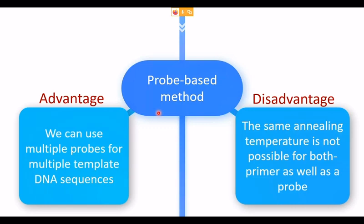The disadvantage of the probe-based method is that the annealing temperatures of the primer and probe may differ, causing problems. We must ensure the primer and probe have closely matching annealing temperatures. For example, if the annealing temperature is set at 60°C, both the primer and probe should have melting temperatures close to that value. Mismatches in annealing temperatures are a common source of troubleshooting.